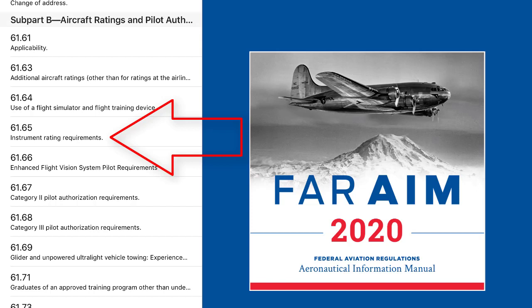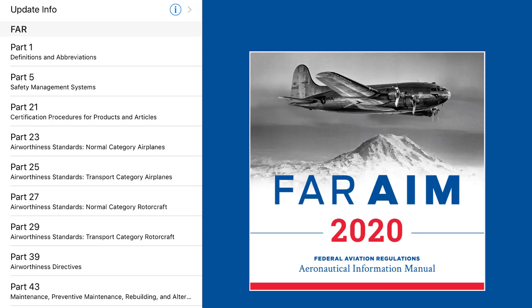Being good at looking this stuff up is key for any of these ratings that you go for. There might be some really smart individuals that could remember absolutely everything written in the FAR AIM, but I think that's very few. Knowing how to use the FAR AIM and quickly look stuff up is key for anybody getting into this. All the times I've done a rating with someone, I've always had to sit down, go back to the FAR AIM, and go through it again to make sure you get everything you need for any specific rating.